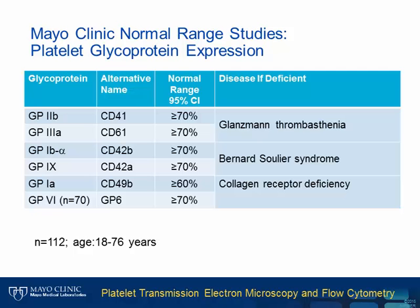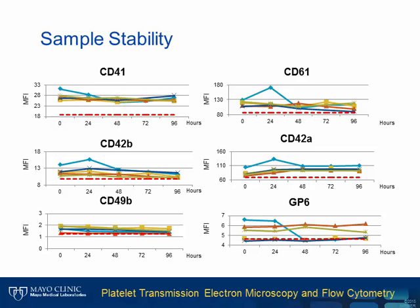We developed a quantitative flow cytometry panel to measure six platelet surface glycoproteins. Platelets collected in ACD tubes are stained with fluorescent-labeled specific antibodies. Platelets are first gated by light scatter, and then the mean fluorescent intensity (MFI) of each antibody is measured. The raw MFI is divided by the median of normal donor MFI to give a percentage of expression level. We established the normal range for all six glycoproteins; expression levels are all above 60 to 70%. Whole blood stored at room temperature in ACD tubes gives stable results for up to four days with no overt change in MFI.